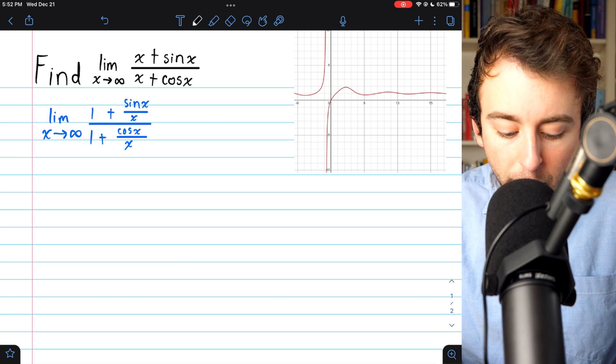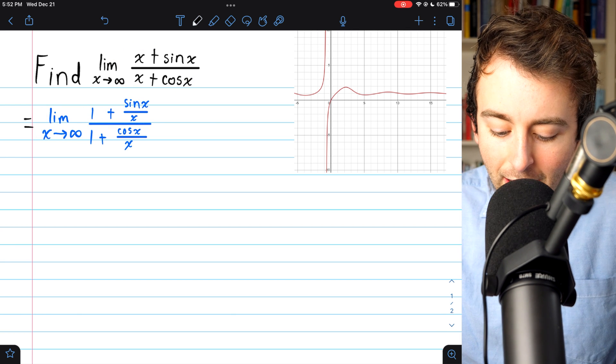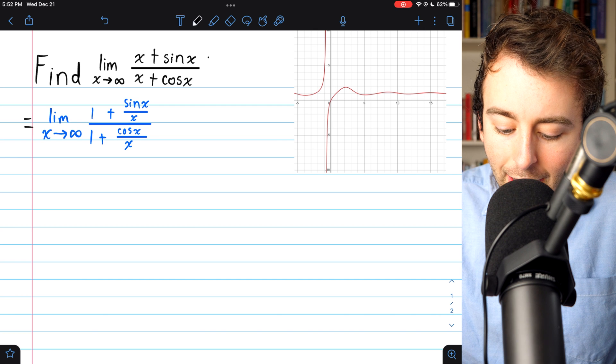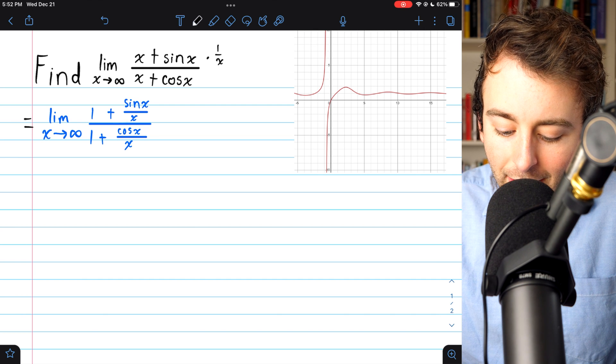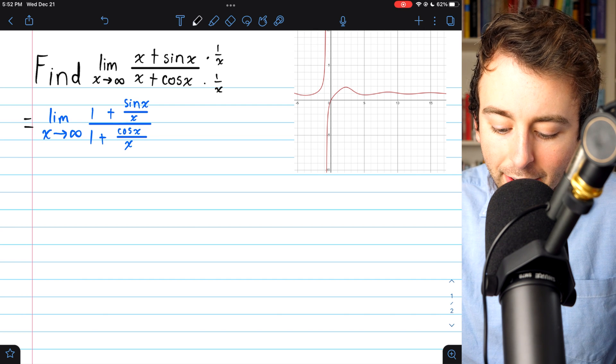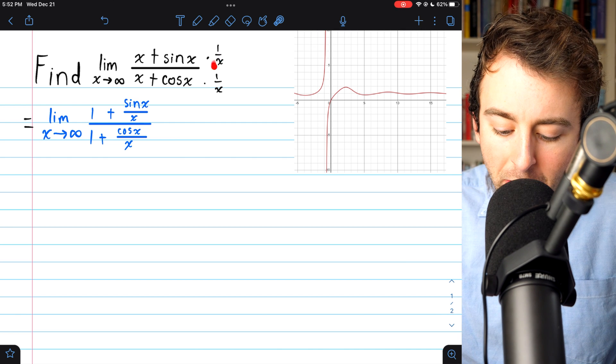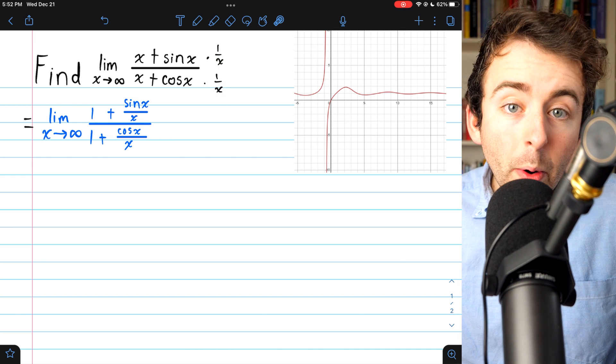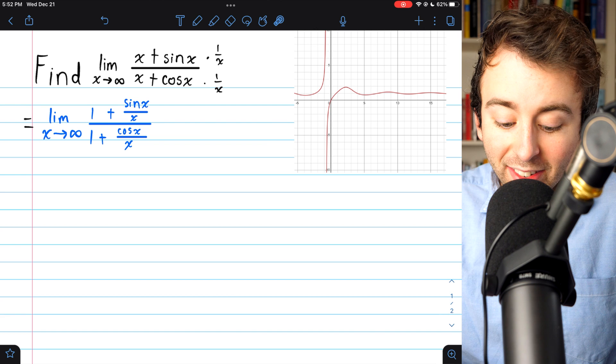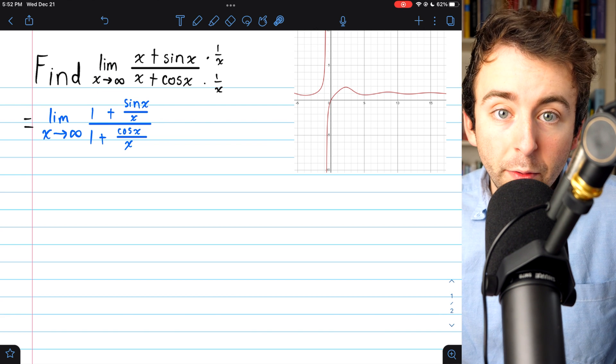So, this limit that we are looking for is equal to this. Again, all we did was multiply the top by 1 over x and the bottom by 1 over x. So, it's like we're just multiplying by 1. And we don't have to worry about the division by x. We know x is non-zero, because x is approaching positive infinity.